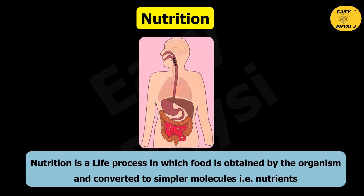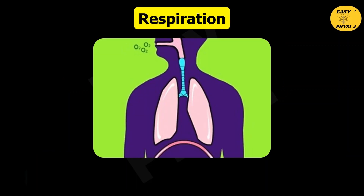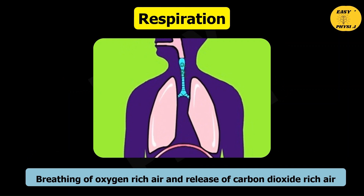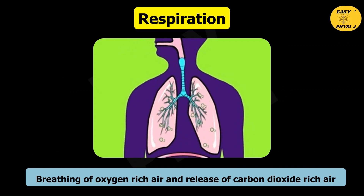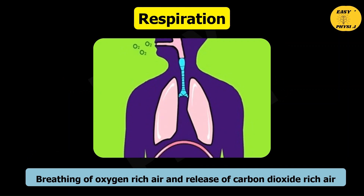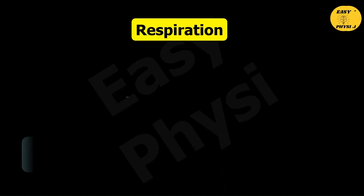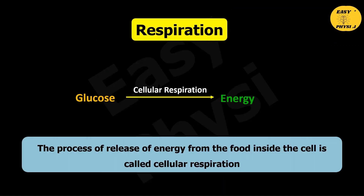Nutrition is a life process in which food is obtained by the organism and converted to simpler molecules, i.e., nutrients. Respiration is the process in which organisms obtain oxygen from the surrounding and release carbon dioxide from the body. Respiration also releases energy from food molecules like glucose.